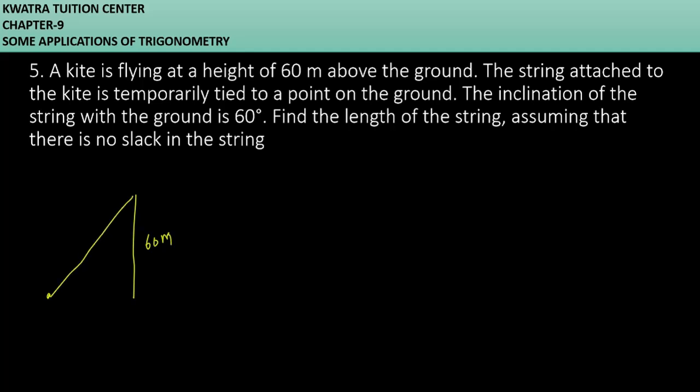So this is flying at a height, the string, this is the length of the string. And you can join the bottom parts of it. So this is your height of the kite. Let's say this is 60 degrees. And this is unknown for us because this is what we need to find.